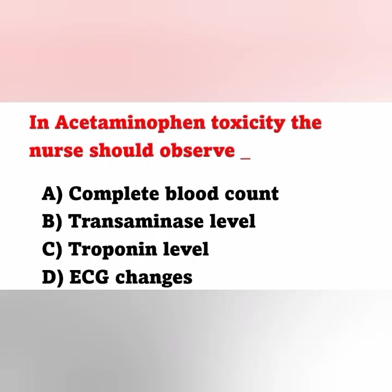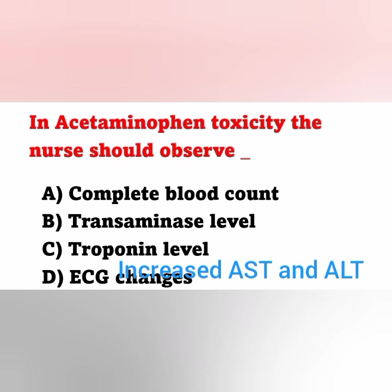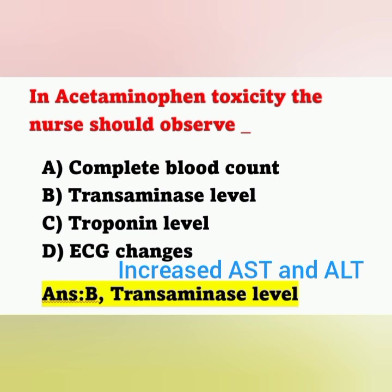Next question: in acetaminophen toxicity, the nurse should observe — Option A: complete blood count. Option B: transaminase level. Option C: troponin level. Option D: ECG changes. Acetaminophen is an antipyretic and analgesic. In acetaminophen toxicity or poisoning, there is extreme elevation of AST (aspartate aminotransferase) and ALT (alanine transferase), both of which are liver enzymes. Therefore, the nurse should check transaminase levels. Option B is the correct answer.